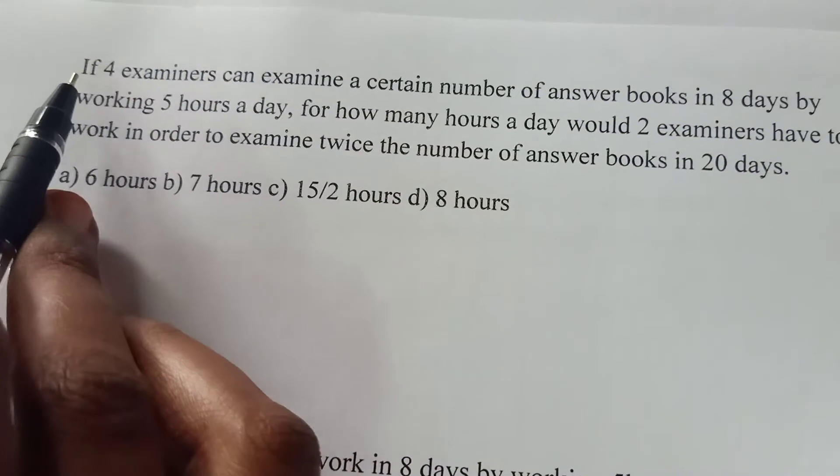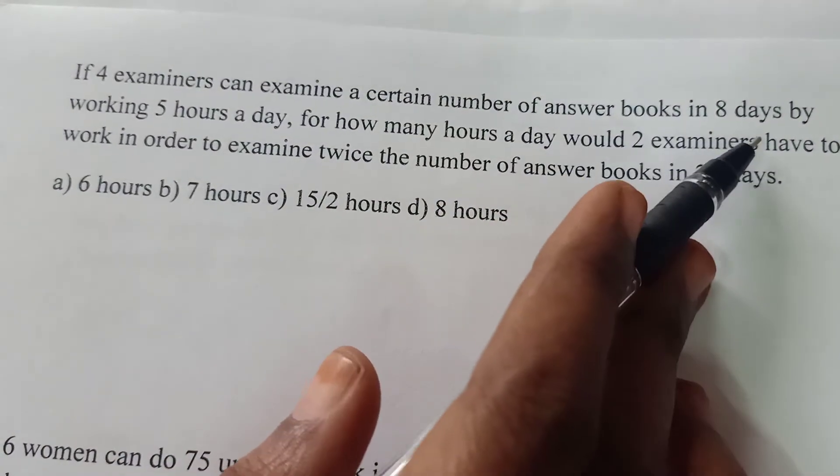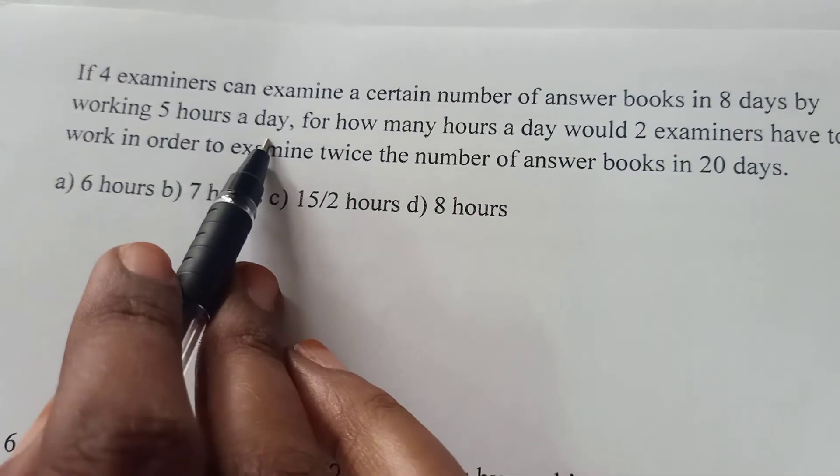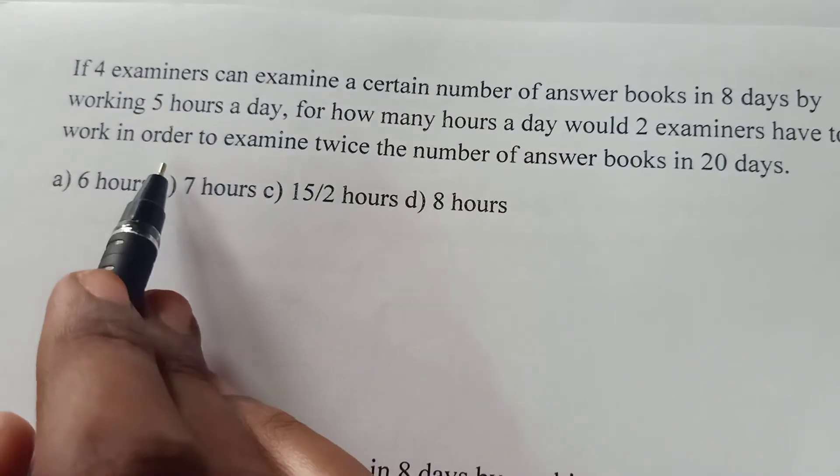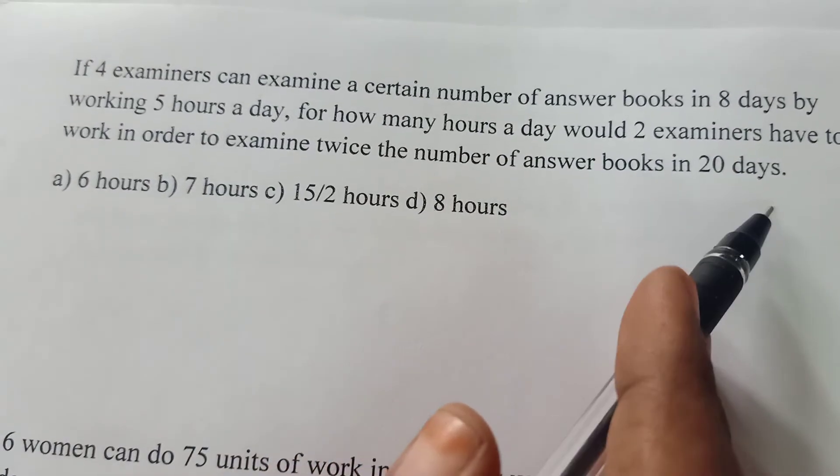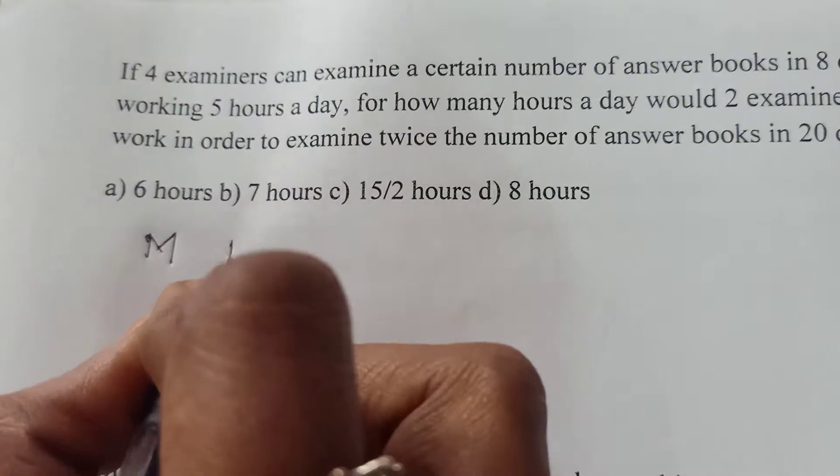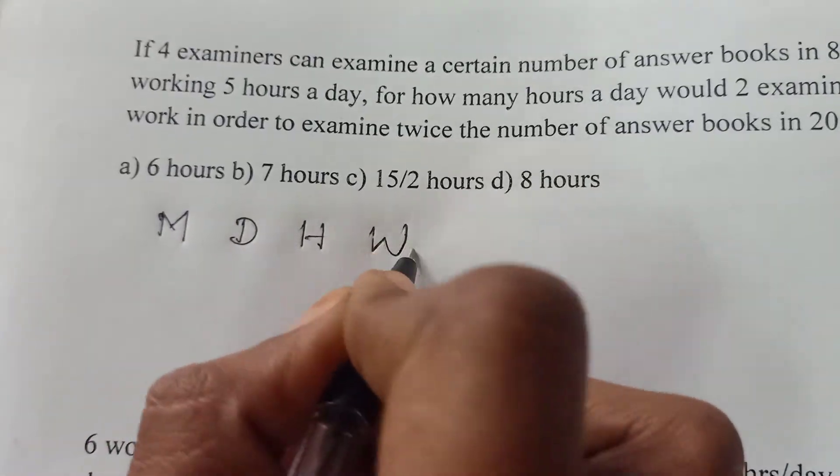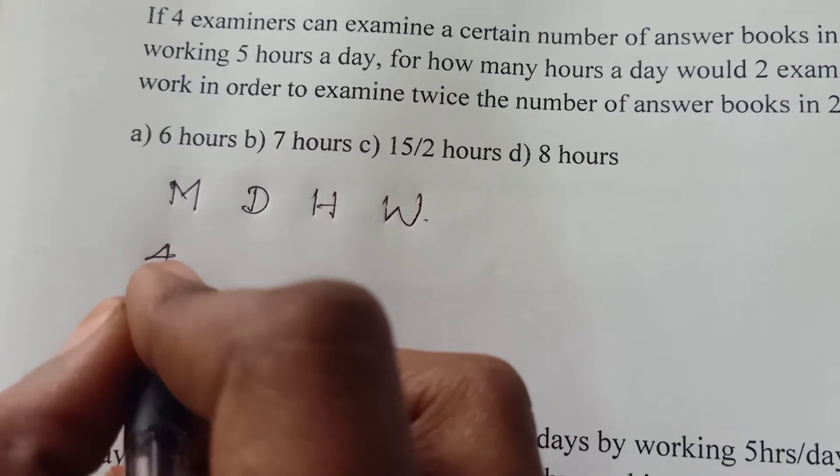Next question. If 4 examiners can examine a certain number of answer books in 8 days by working 5 hours a day, for how many hours a day would 2 examiners have to work in order to examine twice the number of answer books in 20 days? So in this question they have given man, days, hour, and also the work. Man is the person whoever is doing will be considered as a man.